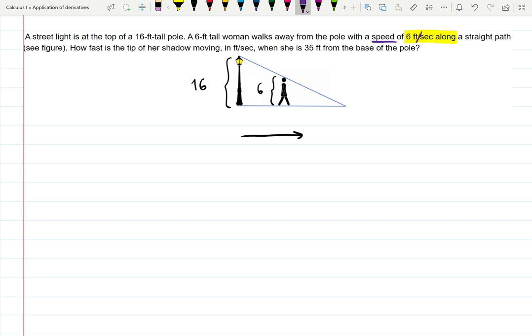So how fast is the tip of the shadow moving, the tip of the shadow is moving in feet per second, when she's 35 feet from the base of the pole? So related rates problems are called related rates because we are having two rates. And for now I don't see any. I definitely see the two slashes, so that's going to be two rates, two derivatives, but where they are, what are the variables?